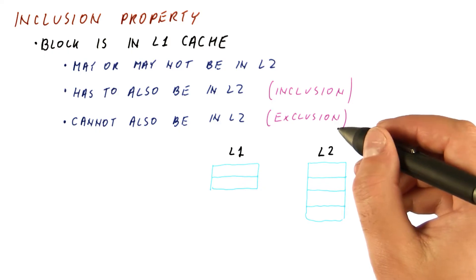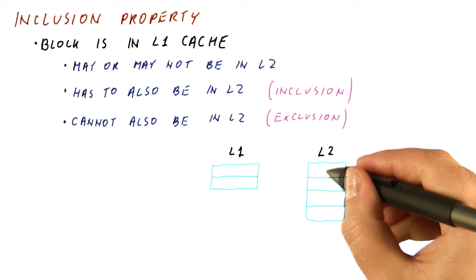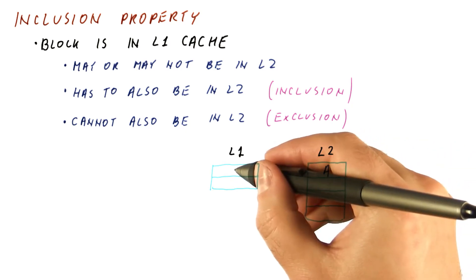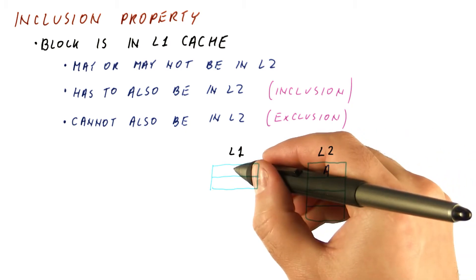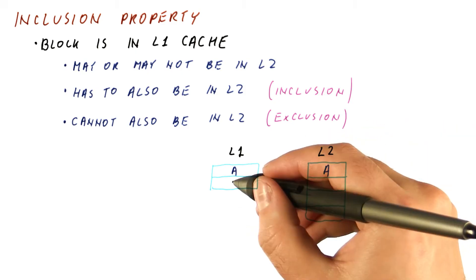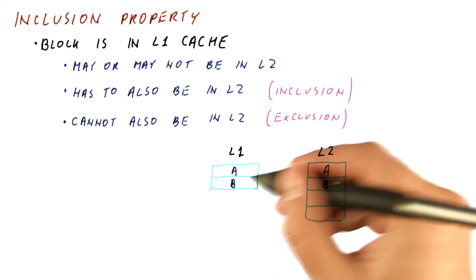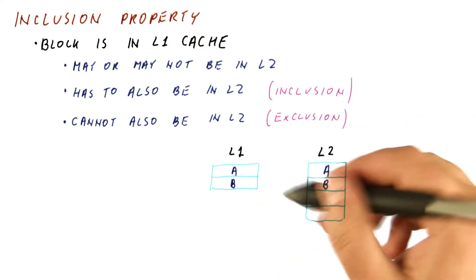Now let's suppose that the processor accesses block A. It's going to be a miss here and a miss here. It's brought from memory, placed here. And then that is fed to the L1 cache, so it places it here. So far we have inclusion. Let's now access block B. It gets brought from memory here and here. We still have inclusion.